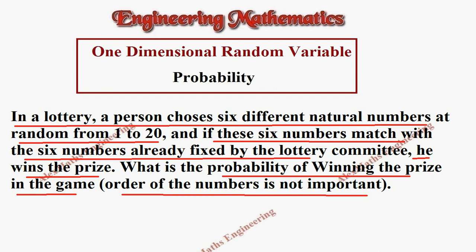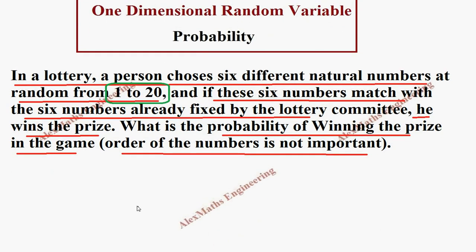So first, we have to categorize these 20 numbers into two parts. One is prize numbers - there are six numbers. We don't know what the numbers are, but there are six numbers.